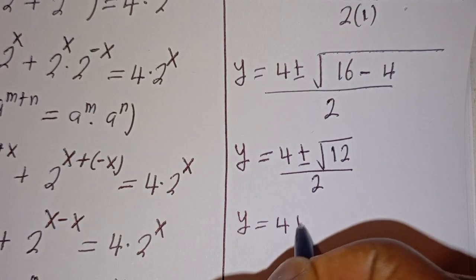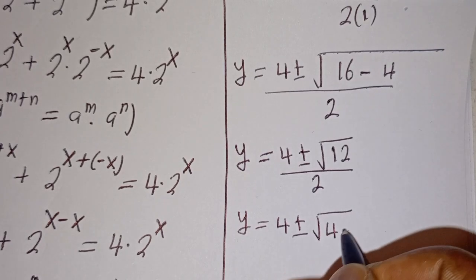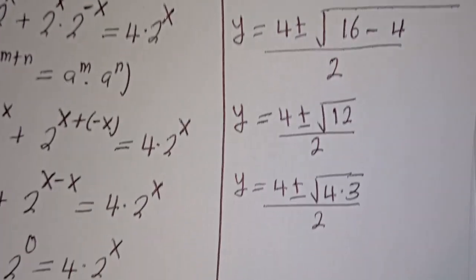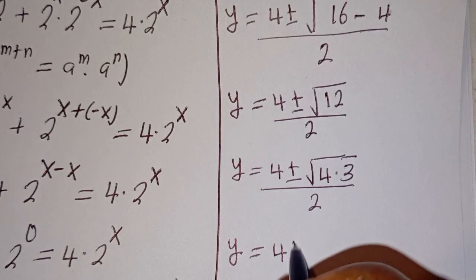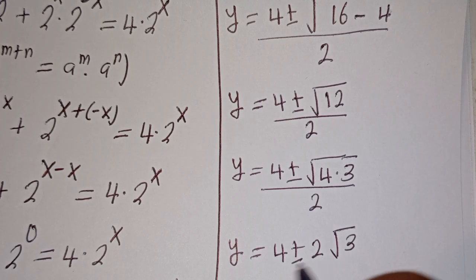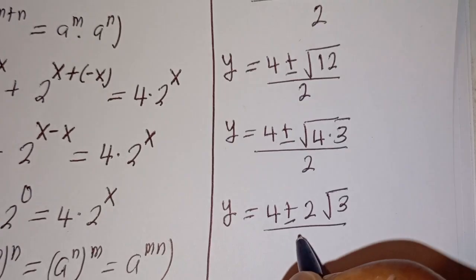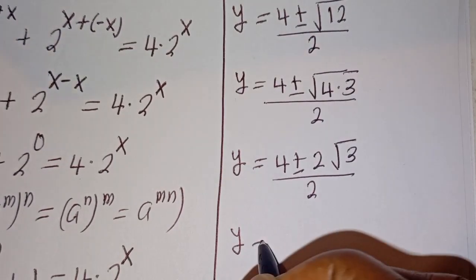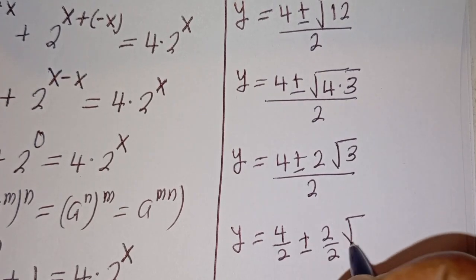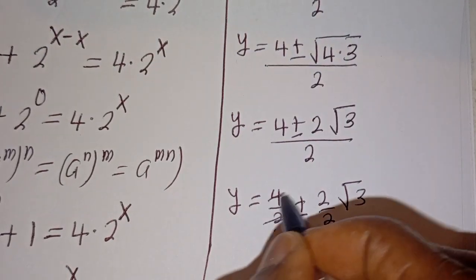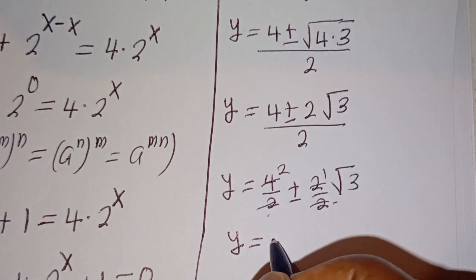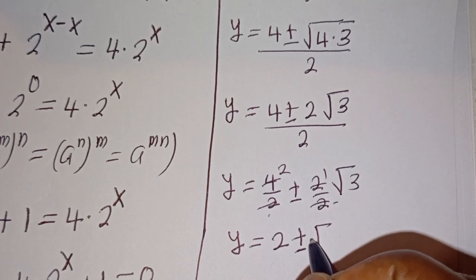y is equal to 4 plus or minus square root of 12, which can be written as square root of 4 multiplied by 3, over 2. Then y is equal to 4 plus or minus 2 root 3 over 2. Now y is equal to 4 over 2 plus or minus 2 over 2 root 3, which simplifies to y is equal to 2 plus or minus root 3.